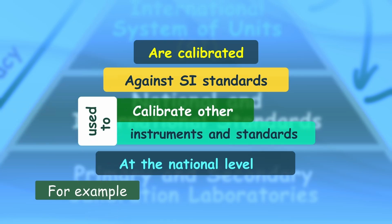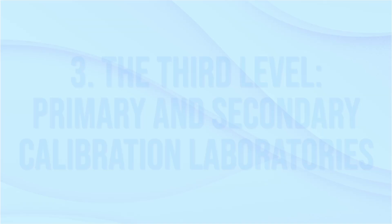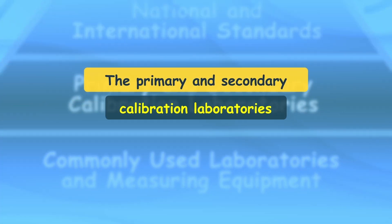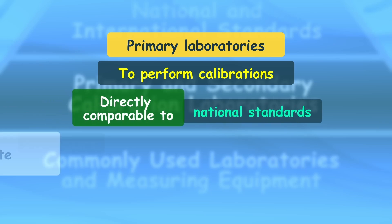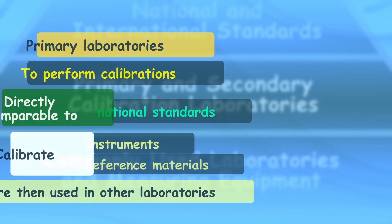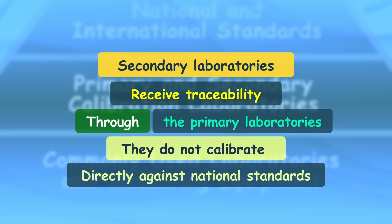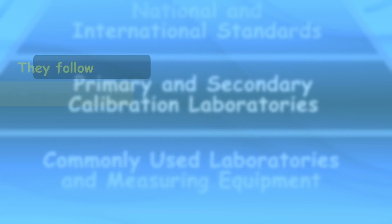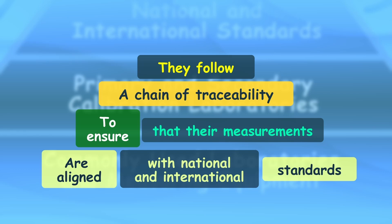At the next level of the pyramid are the primary and secondary calibration laboratories. Primary laboratories have the capability to perform calibrations directly comparable to national standards and calibrate instruments and reference materials used in other laboratories. Secondary laboratories receive traceability through primary laboratories and, although they do not calibrate directly against national standards, they follow a chain of traceability that aligns their measurements with national and international standards.